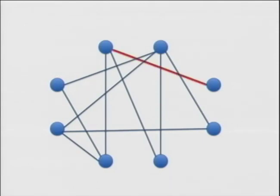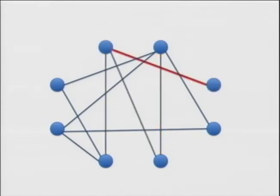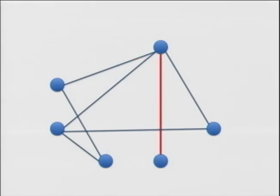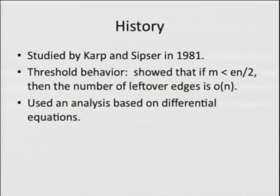You repeat this process until you're out of vertices of degree one, then you quit. There's an edge of degree one, so throw it in the matching and peel it away. Once you peel away those two vertices, all the remaining adjacent edges disappear. Even though you only started with one vertex of degree one, because you're removing edges as you peel, another vertex of degree one is freed up. You can continue peeling and match everything. That's how peeling works.